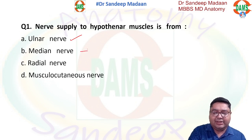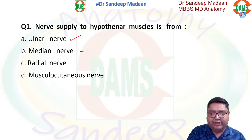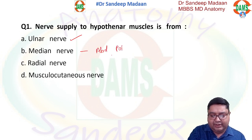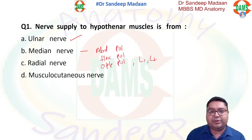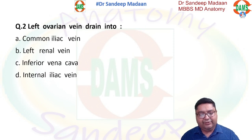To remember easily: all muscles in the palm are supplied by ulnar nerve; median nerve supplies the thenar muscles — abductor pollicis brevis, flexor pollicis brevis, opponens pollicis — along with lumbrical one and lumbrical two.